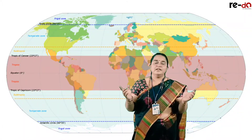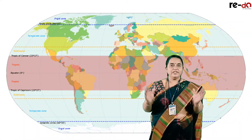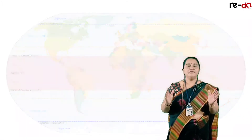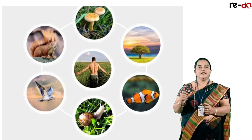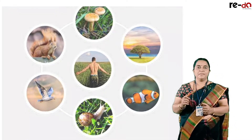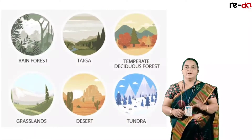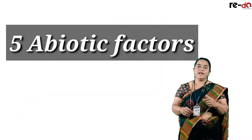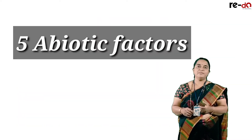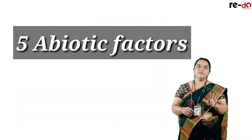So total six biomes you need to remember. A large geographical area in which the living organisms reside represents the biome. Now in the biome, there are total five abiotic factors but as per our syllabus we have to discuss four.